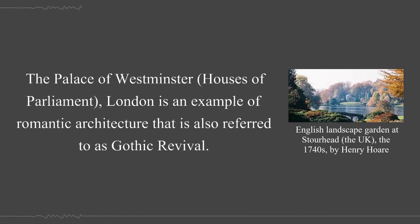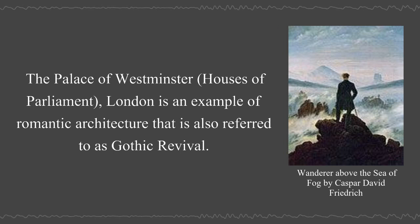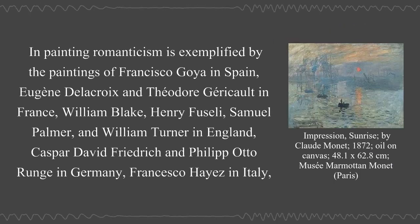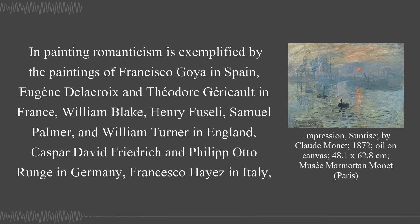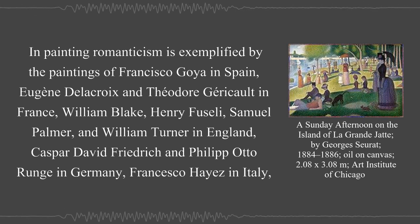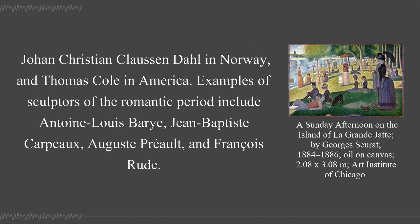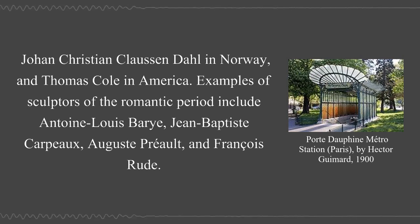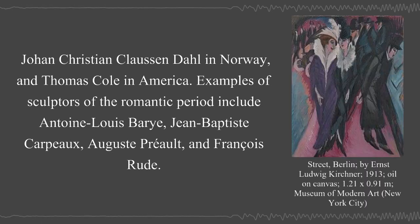The Palace of Westminster, Houses of Parliament, London is an example of Romantic architecture also referred to as Gothic Revival. In painting, Romanticism is exemplified by Francisco Goya in Spain, Eugène Delacroix and Théodore Géricault in France, William Blake, Henry Fuseli, Samuel Palmer, and J.M.W. Turner in England, Caspar David Friedrich and Philipp Otto Runge in Germany, Francesco Hayez in Italy, Johan Christian Dahl in Norway, and Thomas Cole in America. Sculptors of the Romantic period include Antoine-Louis Barye, Jean-Baptiste Carpeaux, Auguste Préault, and François Rude.